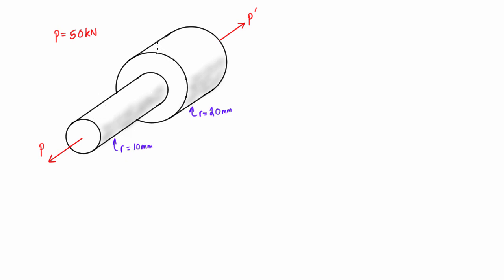This one here has a 10 millimeter radius and this section here has a 20 millimeter radius. We want to know when we subject this to 50 kilonewtons of tension, what is the normal stress going to be in this part? Let's call this part 1 and somewhere along here in part 2. The way that we do this is simple.